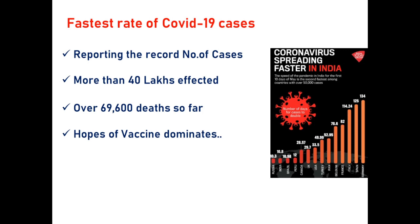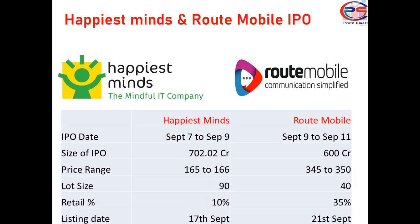The next major theme is that this week, two major IPOs are hitting the market. First is the Happiest Minds IPO, and second is the Route Mobile IPO. We will discuss these in detail — the video links are in the description. If you want to invest in these IPOs, let me show you a quick snapshot.